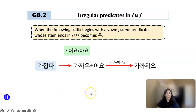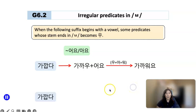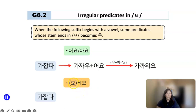가깝다 means 'to be close.' So in conversational context, if something is close, you say 가까워요. Now for the polite honorific speech style, the 으세요 ending is added with the same pattern — ㅂ is removed and you add 우.